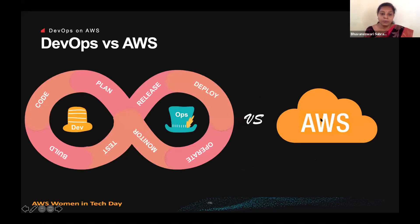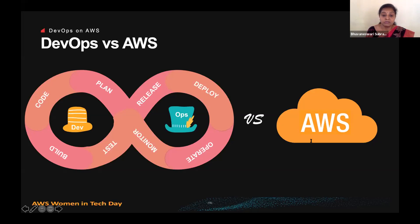When we talk about DevOps on AWS, AWS provides a set of flexible services designed to enable companies to adopt these philosophies more rapidly and reliably, to build and deliver products using DevOps practices. These AWS cloud native tools simplify the provisioning and managing of infrastructure, deploying application code, automating the software release process, and monitoring your application and infrastructure performance — that's the value add when you start adapting cloud native DevOps.